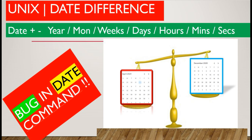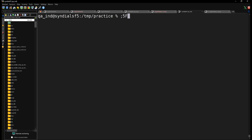Welcome friends to another video. In this video we'll see in Unix how to subtract two dates or add two dates — that means a date difference — which you can find in terms of seconds, minutes, or hours. Also, if you have a date you can add a specific number of years, months, or weeks to it. We'll also see a little-known bug in the date command that has not been widely noticed.